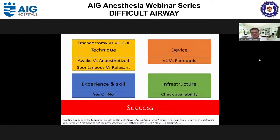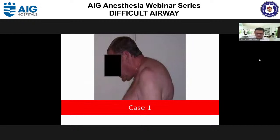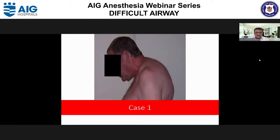In short: define the technique, define the device, check your skills and expertise, and check the availability of your resources. Then you can achieve success in anatomically challenging airway management. For example, for a case with fixed flexion deformity in oncology with acute curvature, I decided not to do tracheostomy, to keep the patient awake, and chose awake fiber optic over video laryngoscopy because the acute curvature means video laryngoscopy may not work despite normal mouth opening.